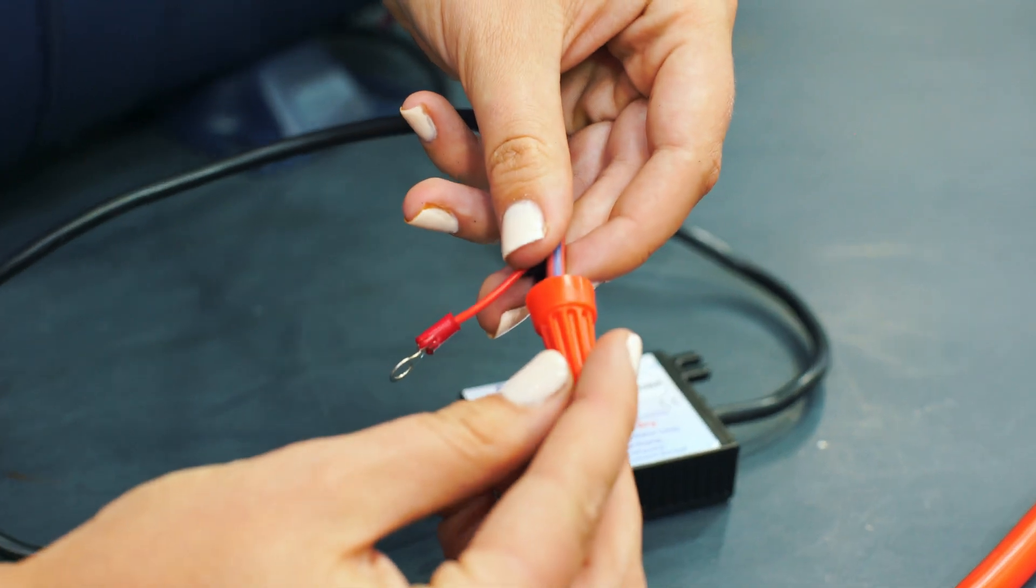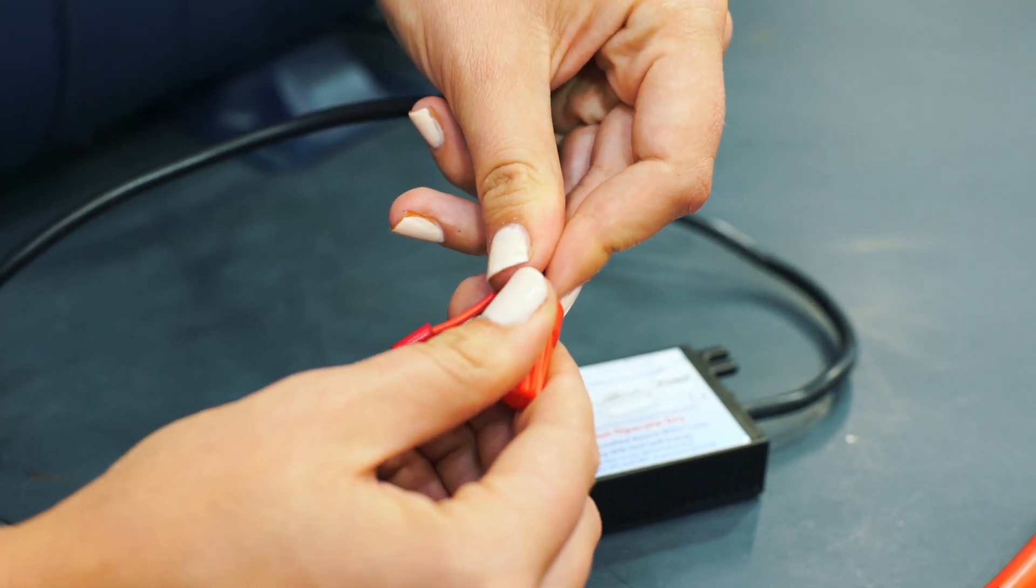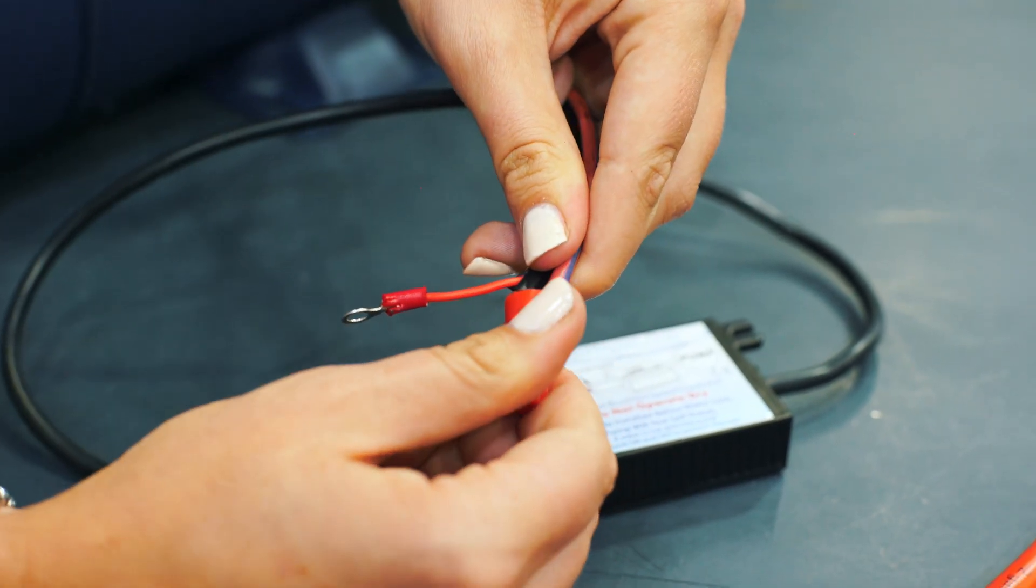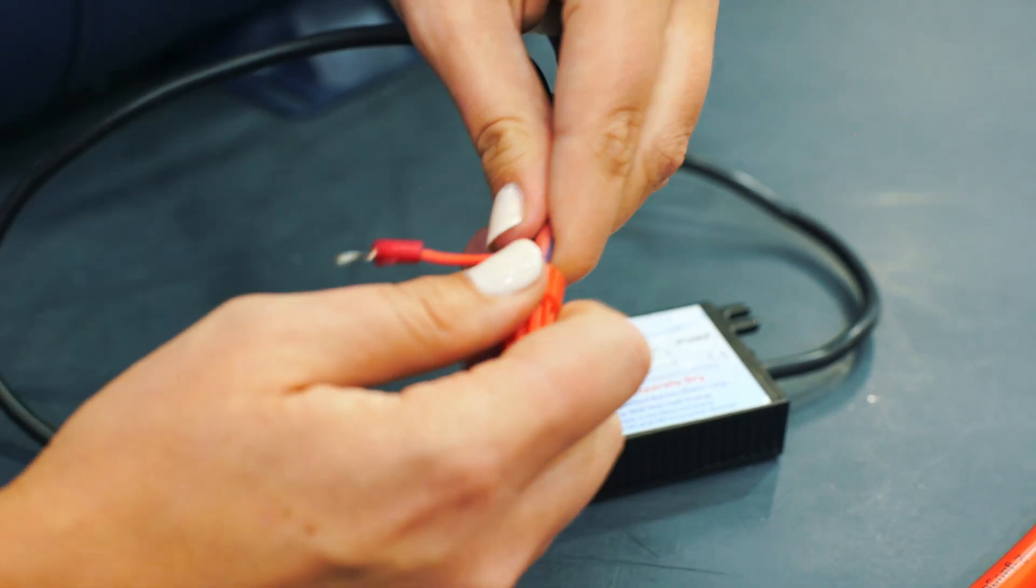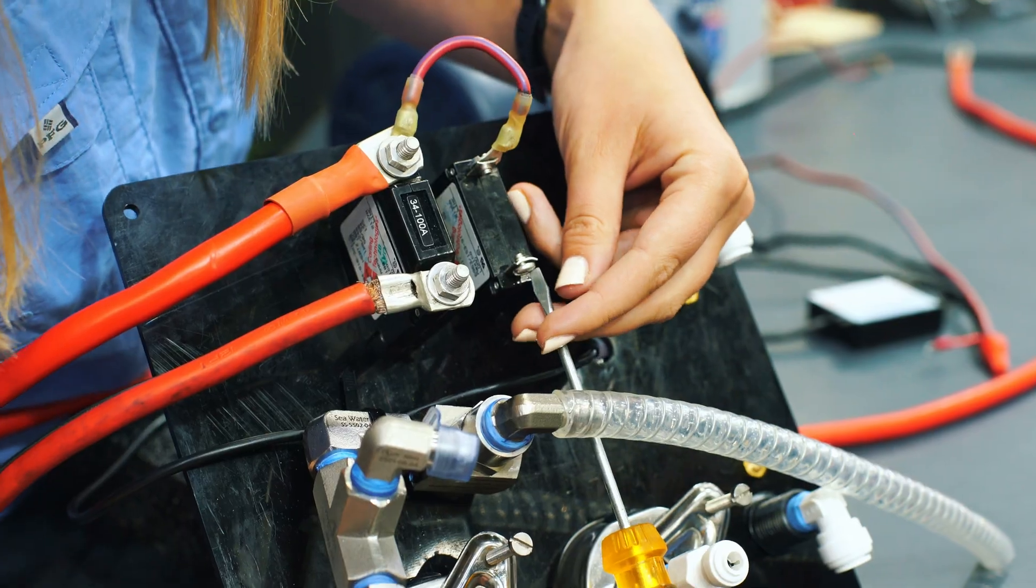We connect the positive red wire from the boost pump to the bottom of the boost pump breaker by removing the screw, then securing the wire around it before reattaching it.